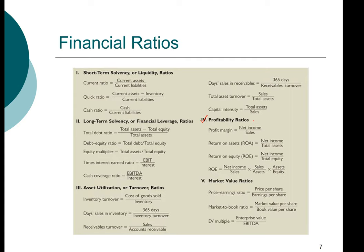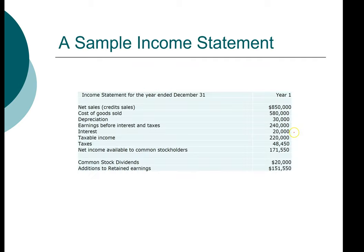So the first ratio is the profit margin. Profit margin, as you can see, is net income divided by sales. Both items come from the income statement. To compute the profit margin is relatively straightforward. In our example, net income is $171,550 and sales is $850,000. So our net profit margin turns out to be about 20%.